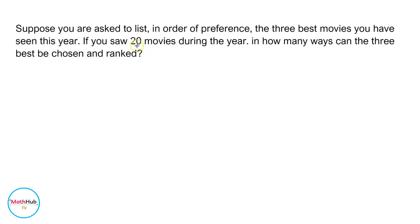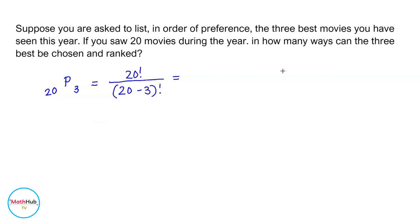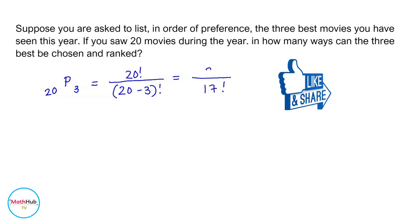We will use the permutation formula. Since we have 20 movies to choose from, we have permutation 20 taken 3, because we are just going to pick the three best movies. Permutation 20 taken 3 is equal to 20 factorial divided by 20 minus 3 factorial. 20 minus 3 is equal to 17, so we have 17 factorial in the denominator and 20 factorial in the numerator.